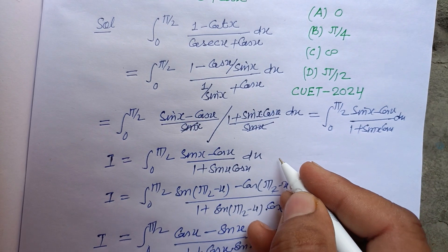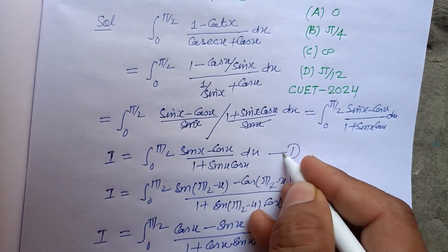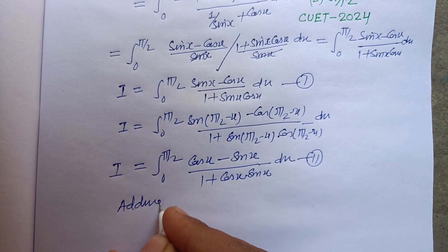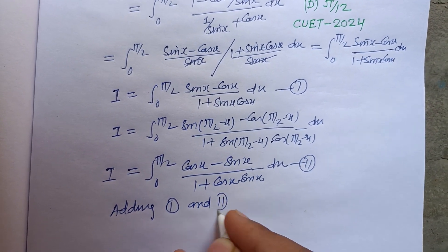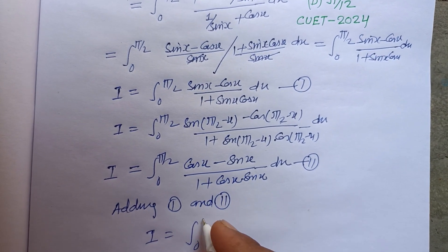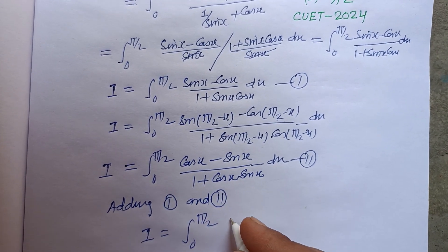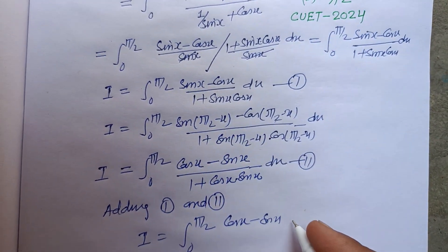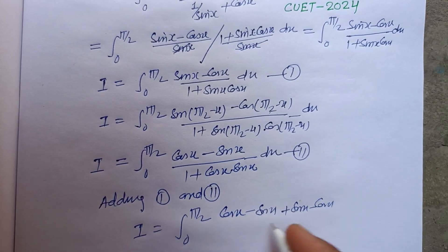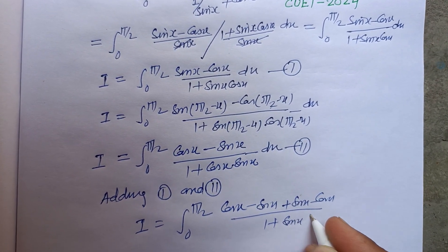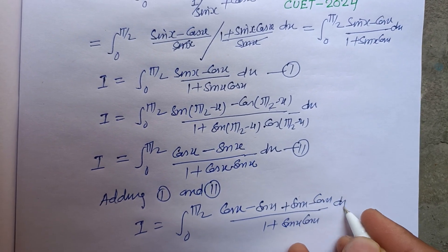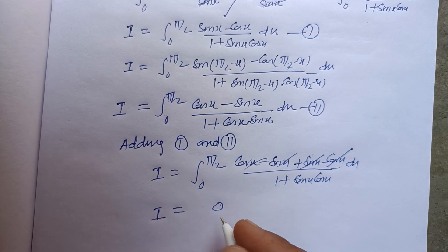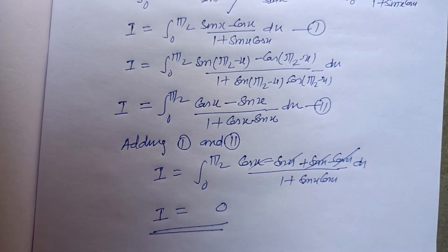This is the first expression and the second expression. Adding both: 2I equals the integral from 0 to π/2 of (cos x - sin x + sin x - cos x) / (1 + sin x cos x) dx. The numerator cancels out to zero, so 2I = 0, meaning I = 0.